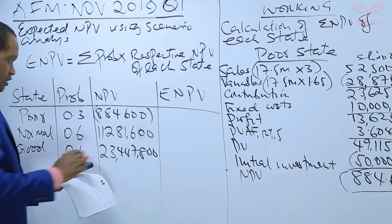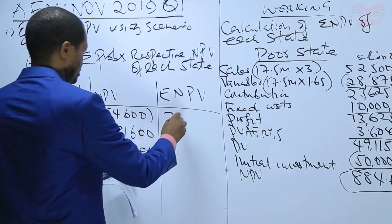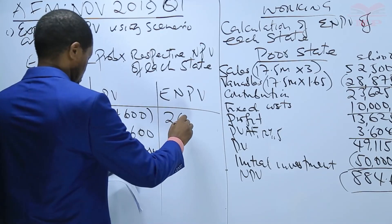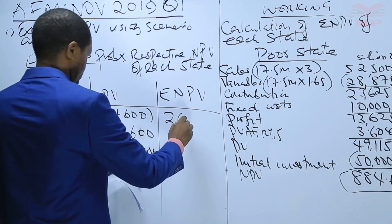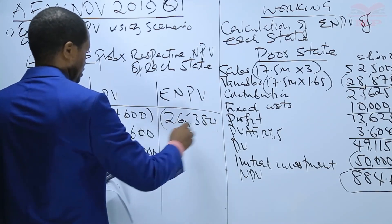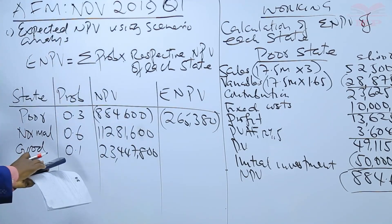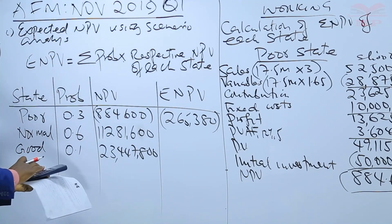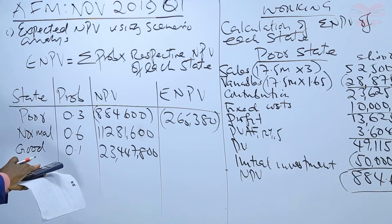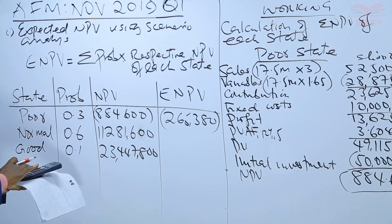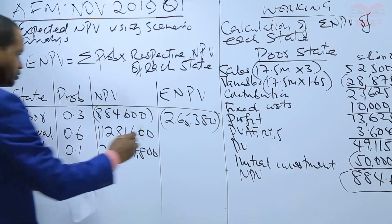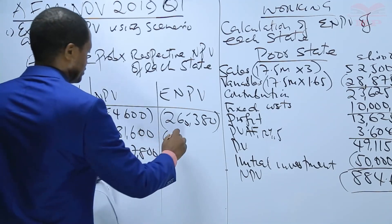Calculating the weighted NPVs: 0.1 times negative 884,600 = negative 88,460. Then 0.6 times 11,281,600 = 6,768,960.